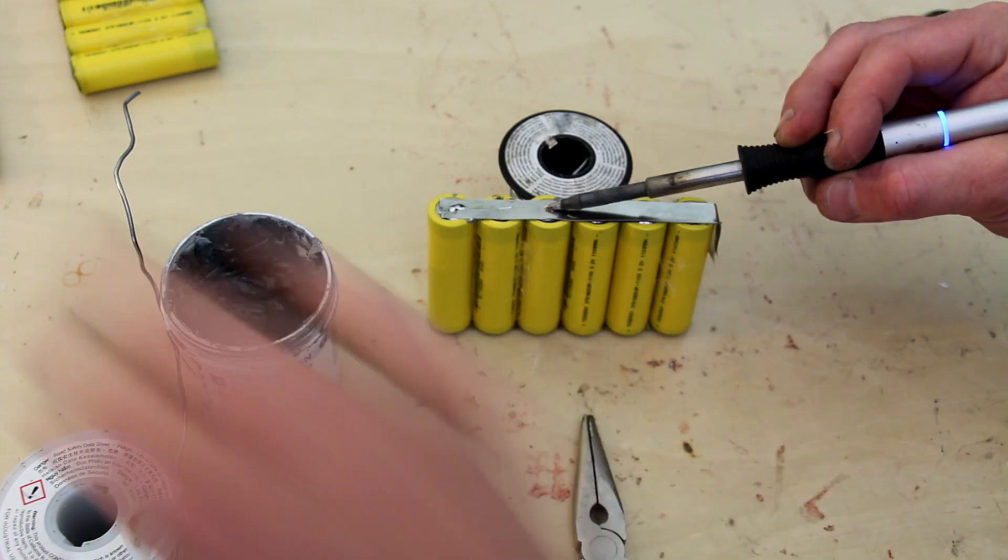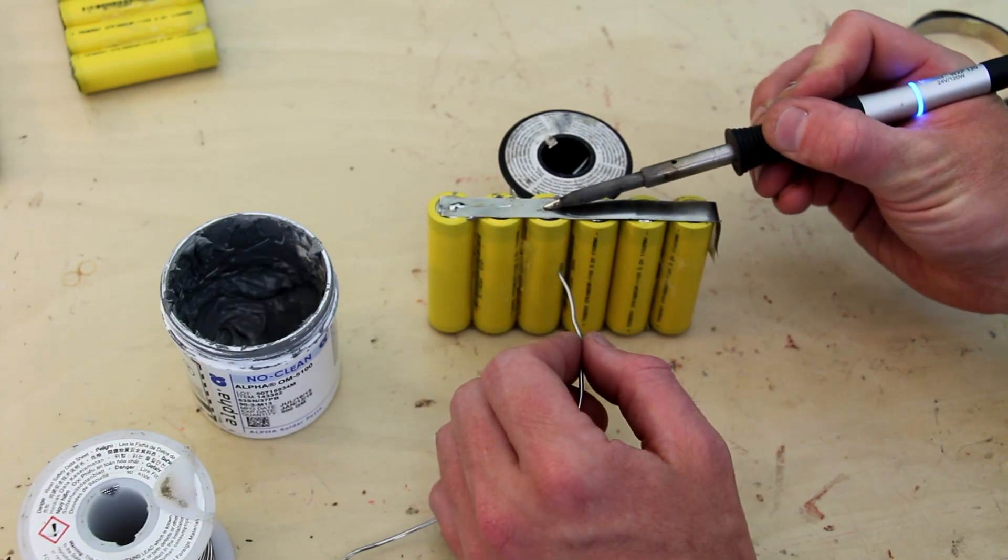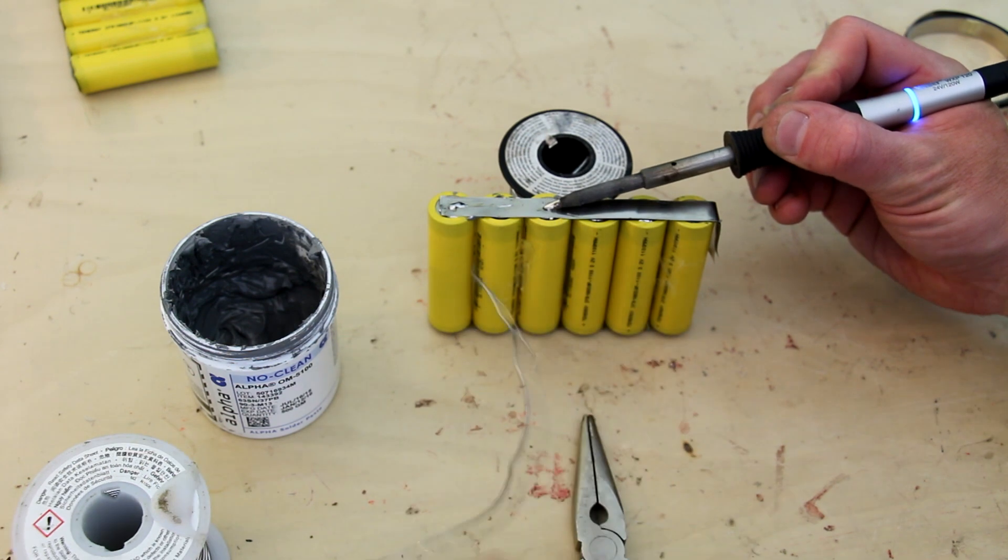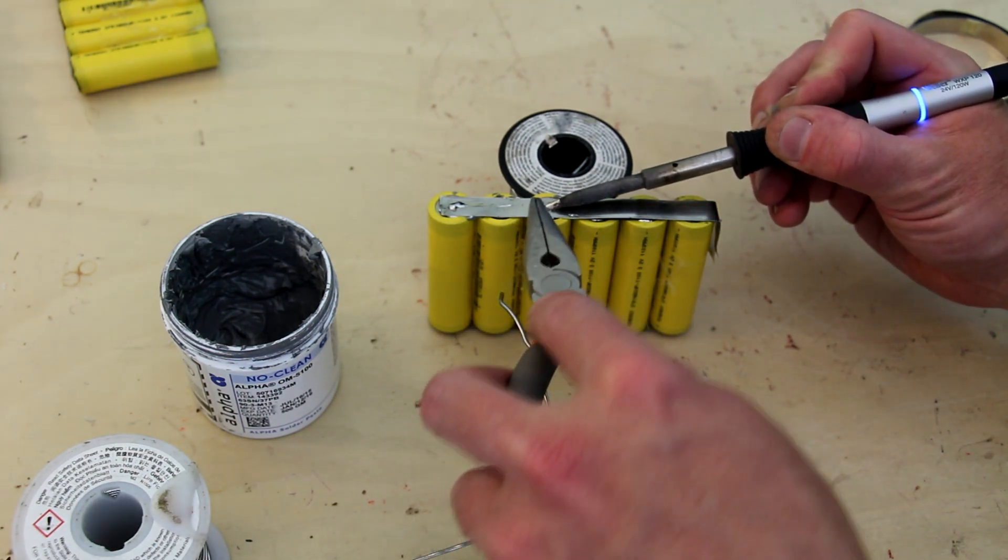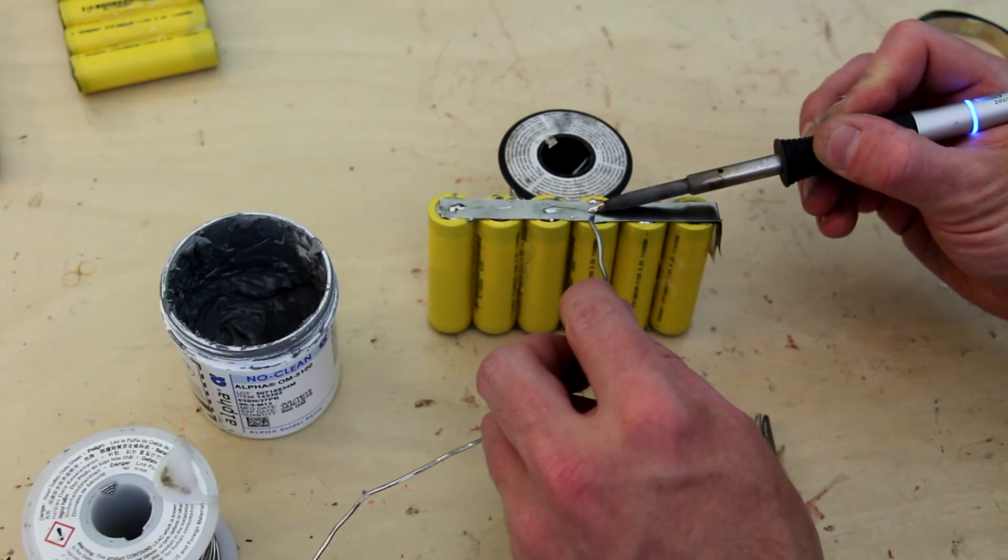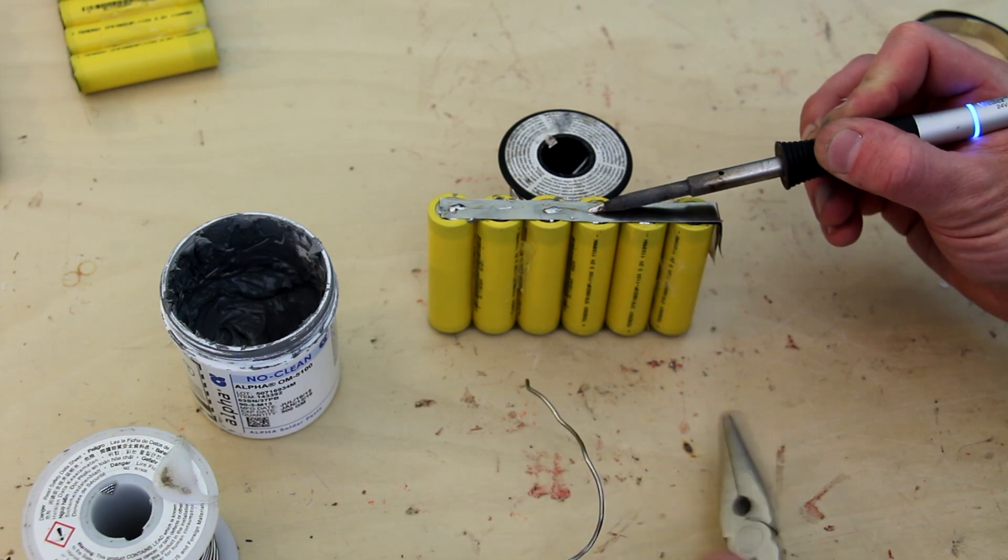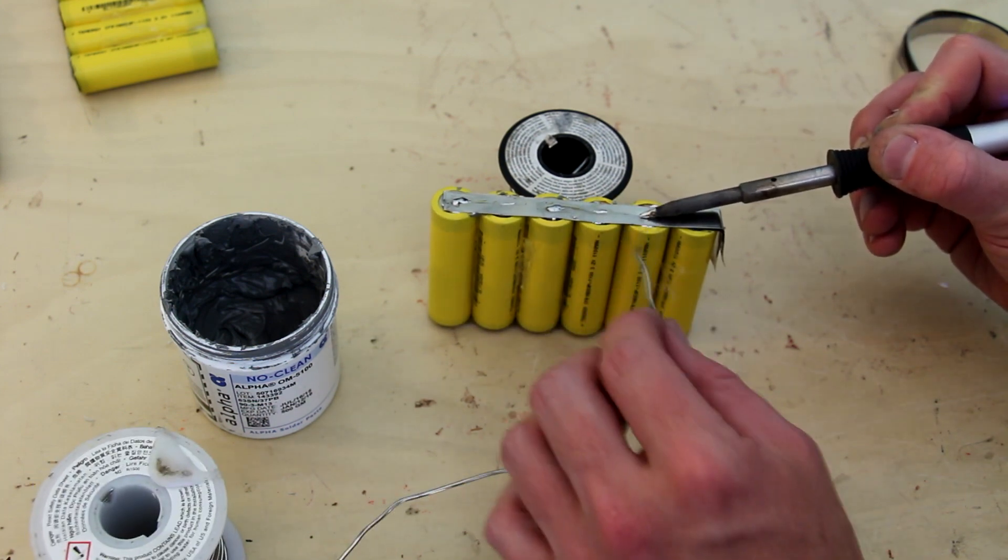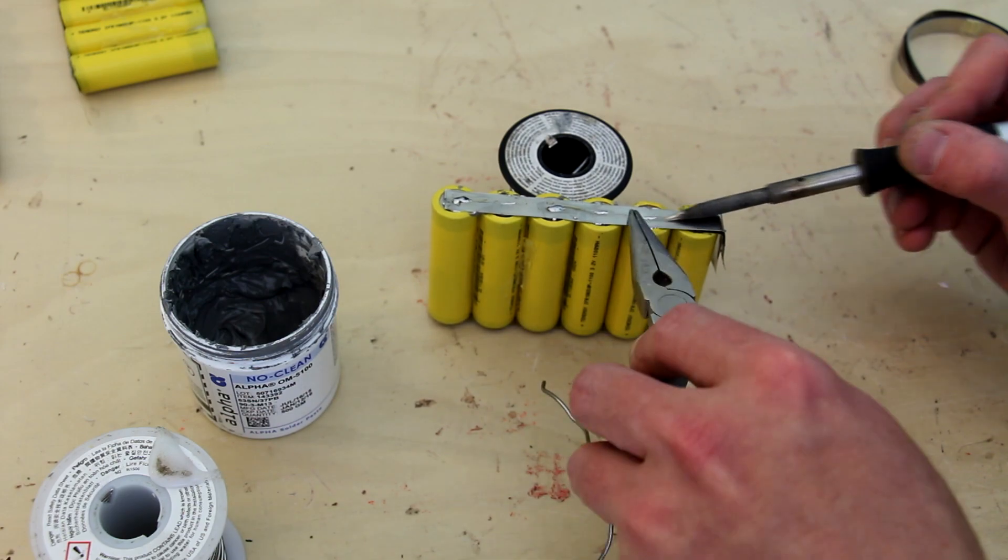I'm using solder paste between the joint and then placing a soldering iron with a little bit of extra solder to increase the surface area of the iron over top and bonding it together. While I don't really need to bond it to every cell all the way down, I feel this is simply a more professional way to do it.